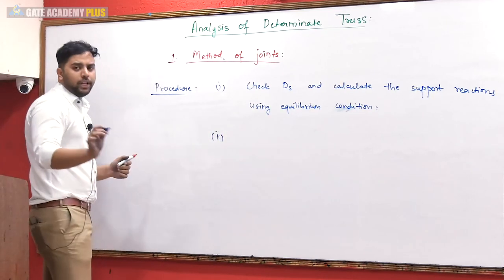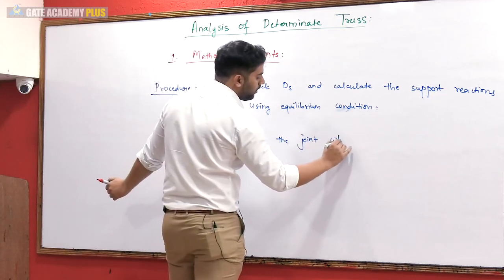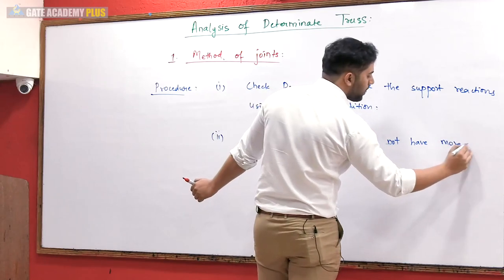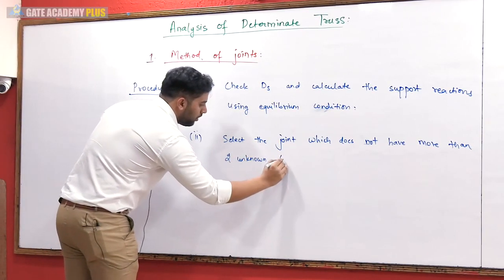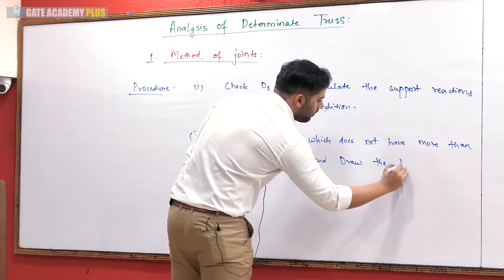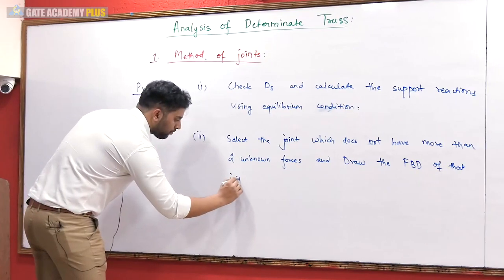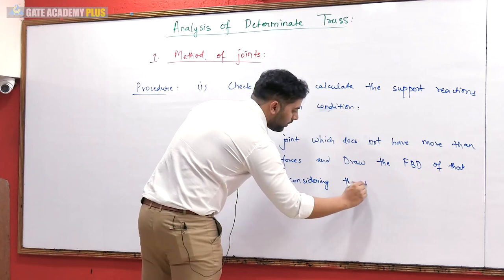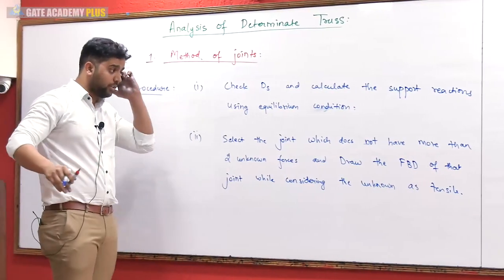The second step is to select the joint which does not have more than two unknown forces, and draw the free body diagram of that joint, while considering the unknown forces as tensile.